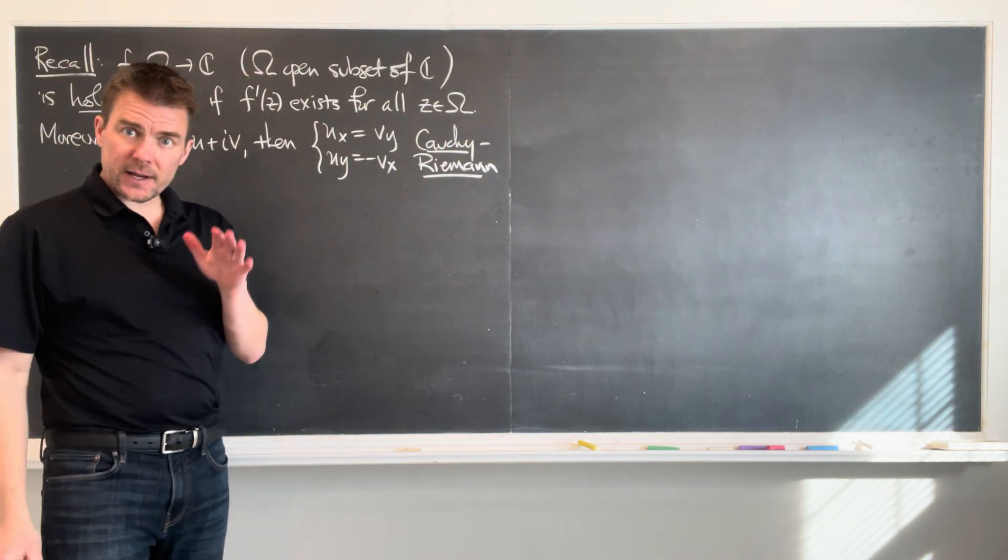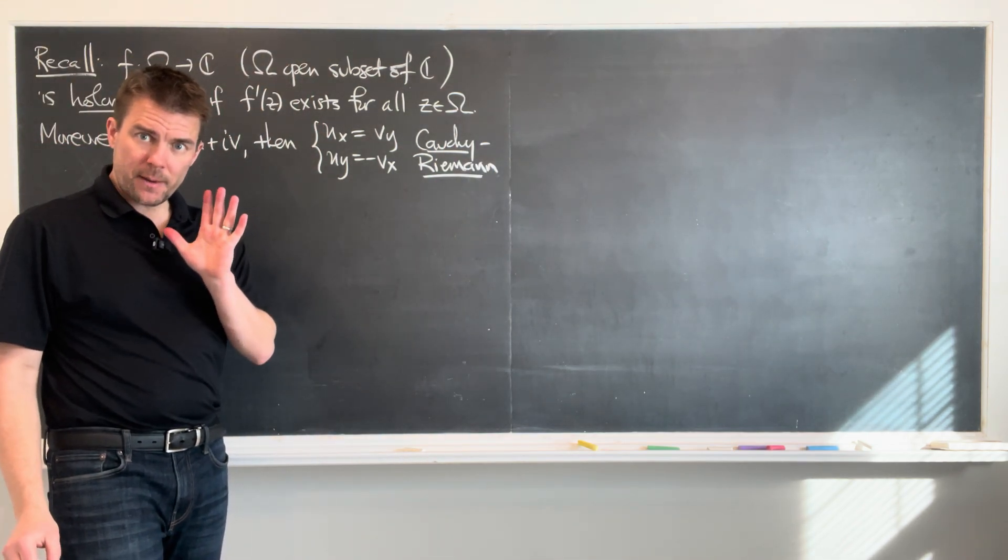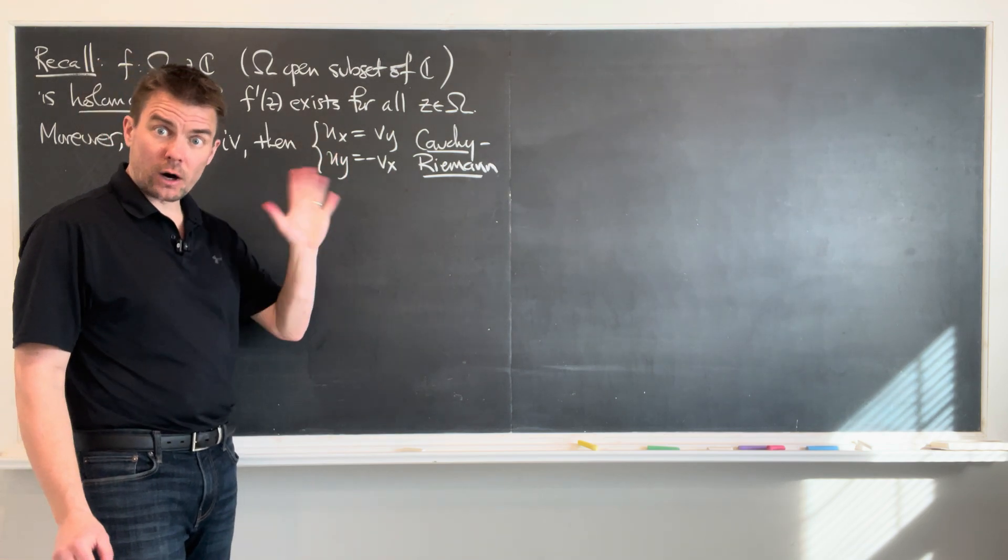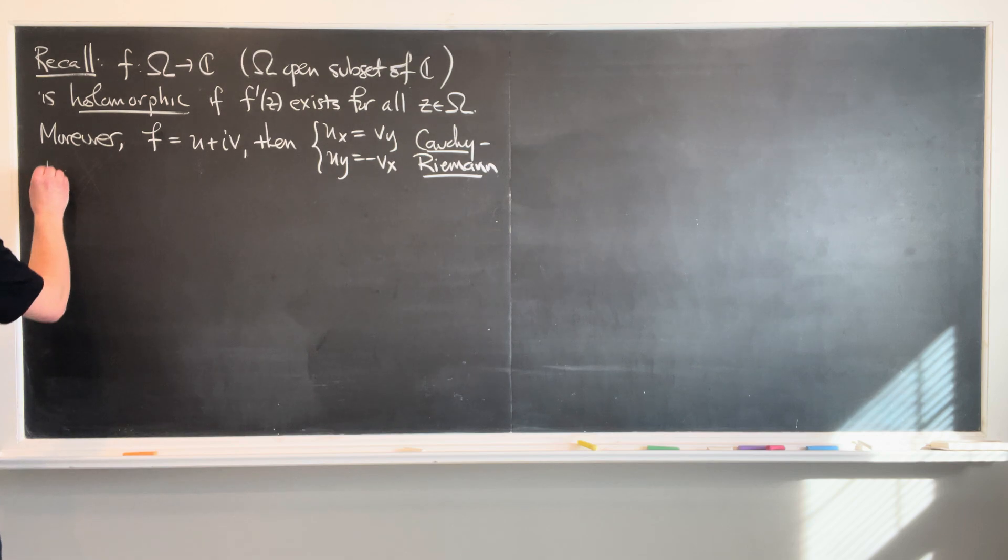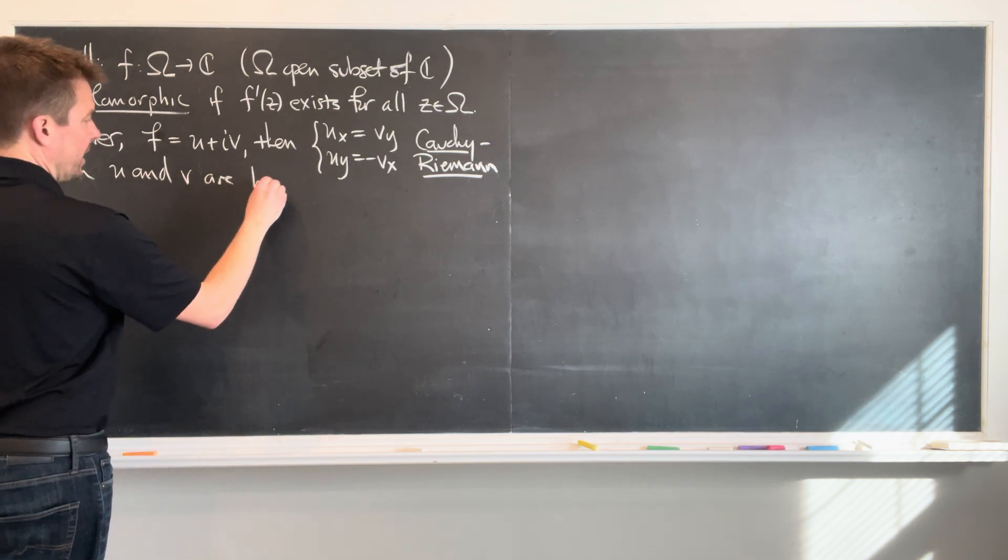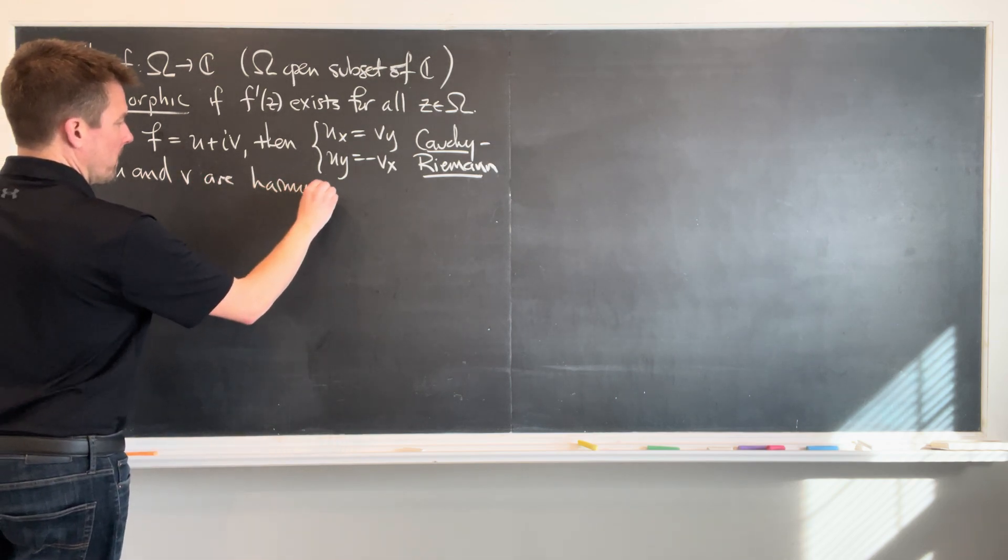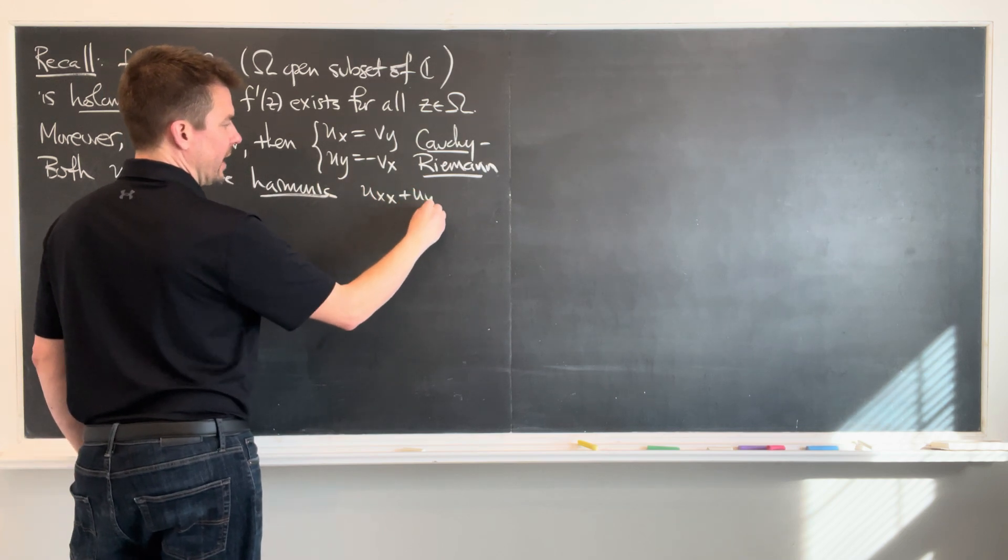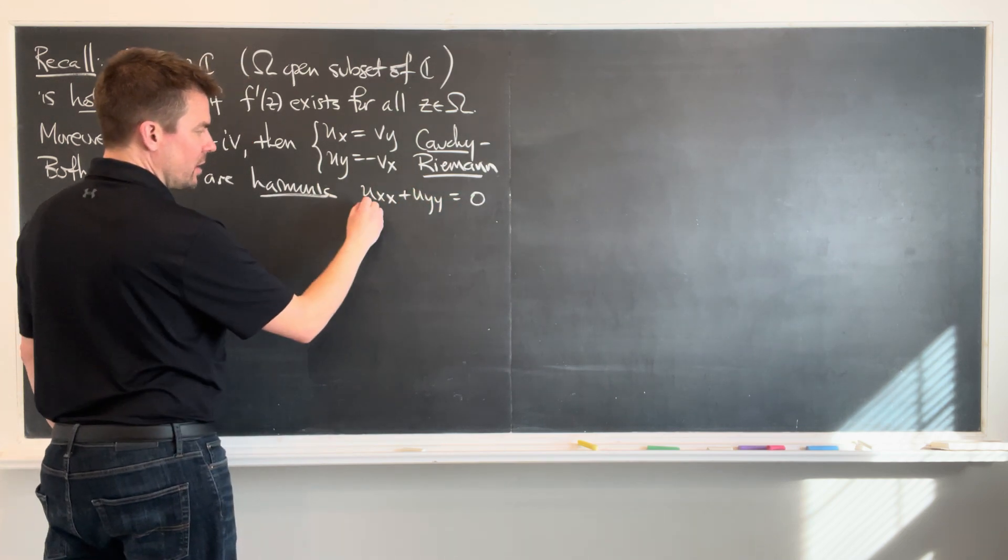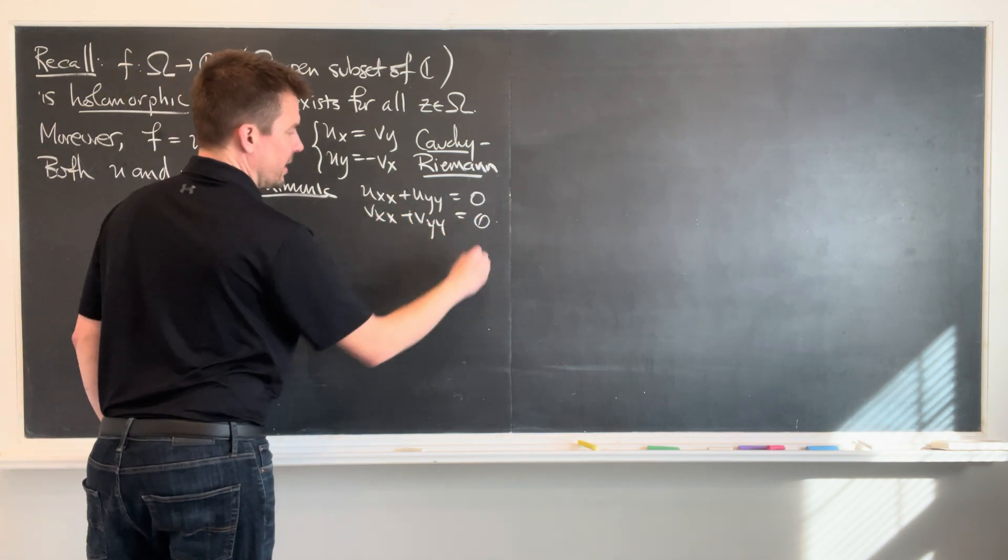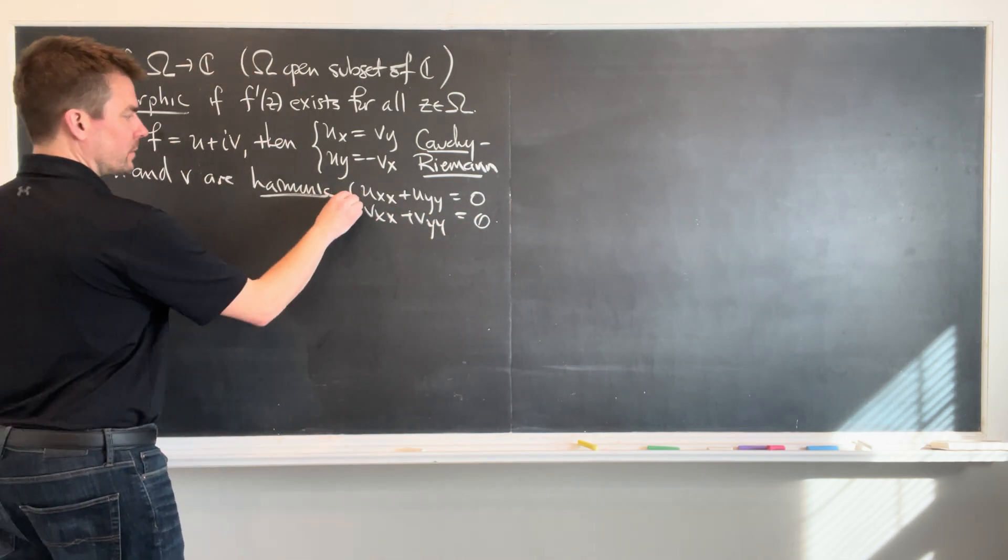And as a direct consequence of the Cauchy-Riemann equations, we know that both u and v are harmonic functions. So both u and v are harmonic, which means uxx plus uyy, the Laplacian of u is zero and the Laplacian of v is equal to zero. Beautiful.